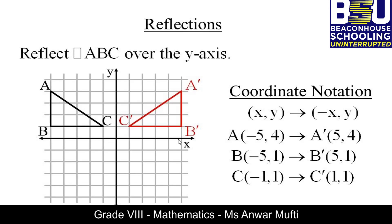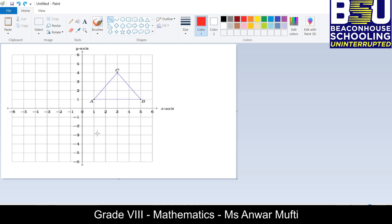Now we will try reflection over the y-axis. This vertical line passing through the origin is the line of reflection. Point A is five units away, so A-bar is five units on the other side. We do the same for B and C. Comparing the coordinates, the x-coordinate values are negated — negative 5 becomes 5, and negative 1 becomes 1 — whereas the y-coordinates remain unchanged.